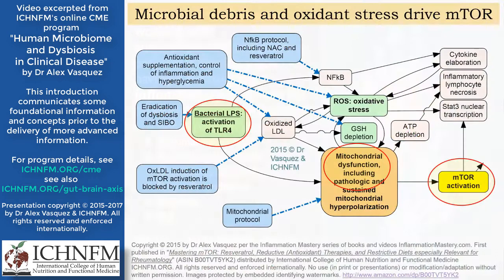The activation of mTOR by bacterial debris is modeled here: bacterial endotoxin or LPS interacts with a receptor called toll-like receptor number 4. When bacterial endotoxin activates toll-like receptor 4, that triggers an inflammatory response mostly mediated through NF-kappa-B, but it also triggers an alteration in mitochondrial function called mitochondrial hyperpolarization. That predisposes toward sustained activation of mTOR, which — as I'll show you later — is a primary driver of autoimmunity and sustained inflammation.